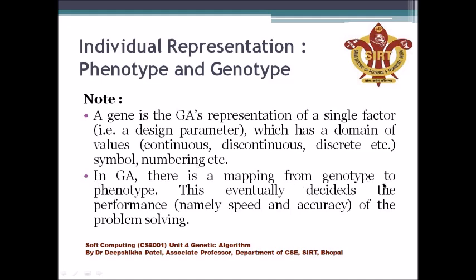In GA there is a mapping from genotype to phenotype, and this eventually decides the performance of the problem solving. The encoding scheme you use depends on the problem. The encoding will affect performance, which we measure in terms of speed and accuracy. If the encoding is complex, speed will decrease and accuracy will automatically be reduced.